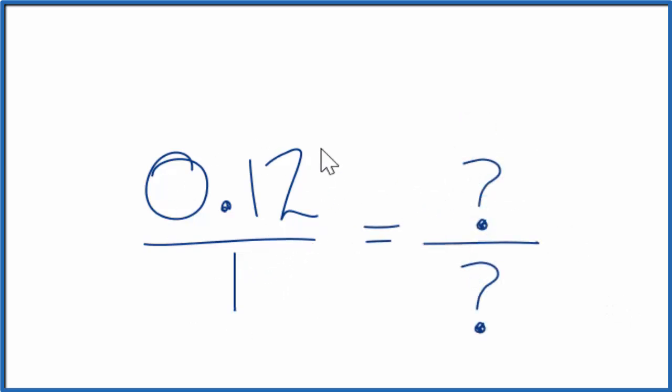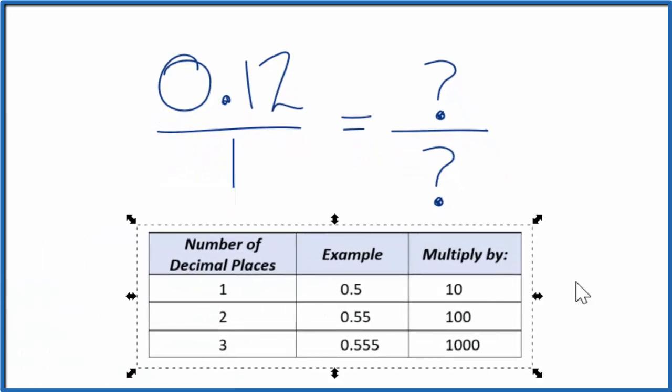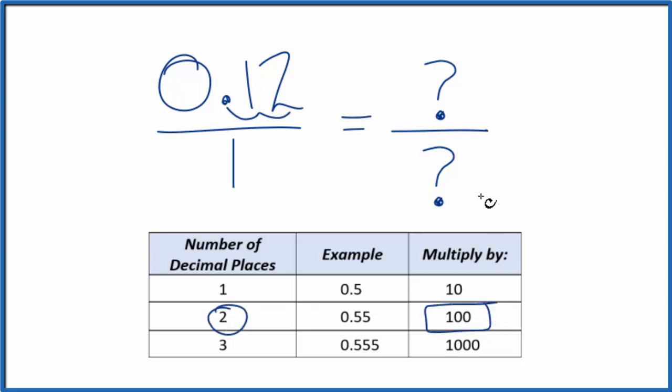What would be nice is if we could get this to be a whole number, and then we could simplify our fraction. The way we do that is because we have two decimal places here, one, two, we're going to multiply by 100. That'll give us the whole number.